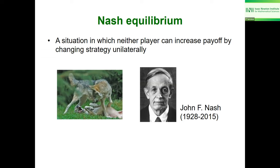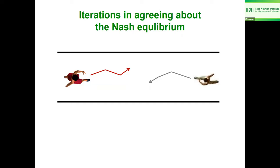Consider two male wolves fighting for a mating partner or food. They have two strategies: to be very aggressive (the hawk) or to be peaceful and surrender (the dove). If both are hawks, they fight until they damage each other, so it's better for one to switch to the peaceful strategy. The two Nash equilibria are that one surrenders or the other does, and rituals are often used to decide which — showing that there is often some iteration in reaching the Nash equilibrium.